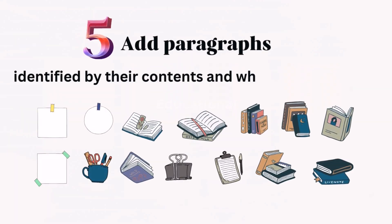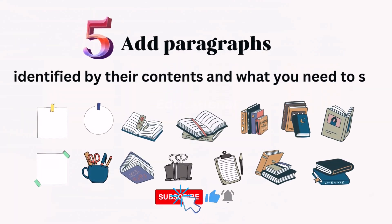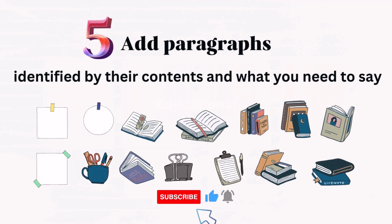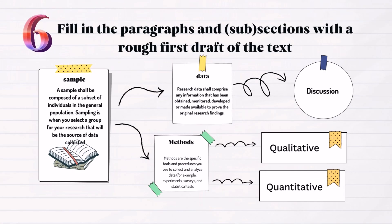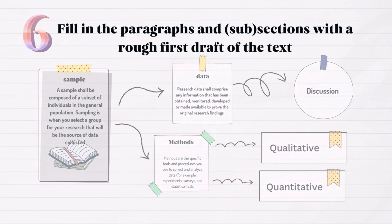Step 5: Add paragraphs, identified by their contents and what you need to say. Step 6: Fill in the paragraphs and subsections with a rough first draft of the text. You may want to start with the easiest sections, usually sample, data, methods, and leave the hardest for later — discussion.